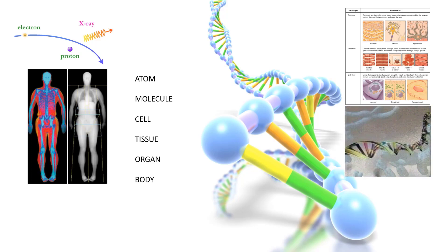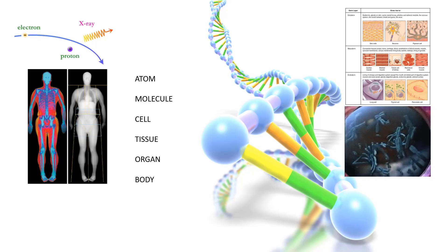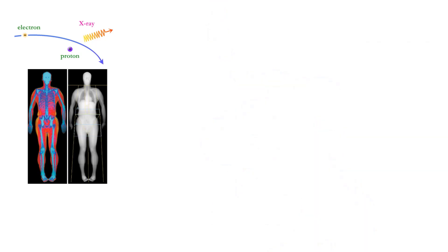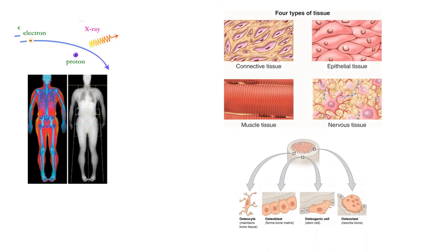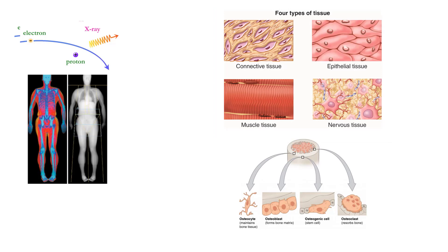The cells put together create tissue. Variations of cells create four types of tissue: connective tissue, epithelial tissue, muscle tissue, and nervous tissue.